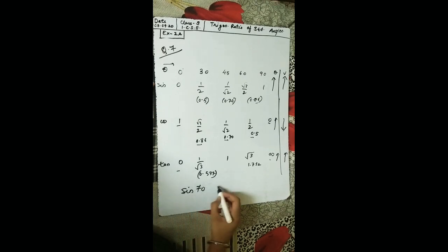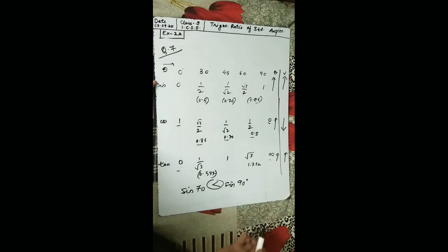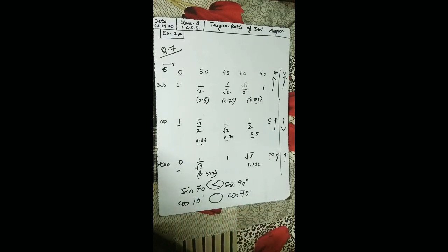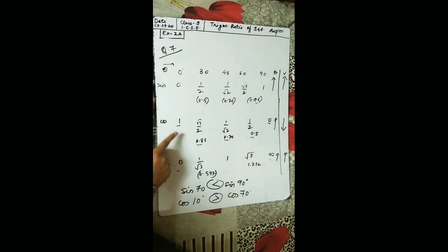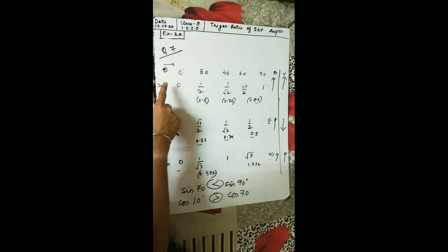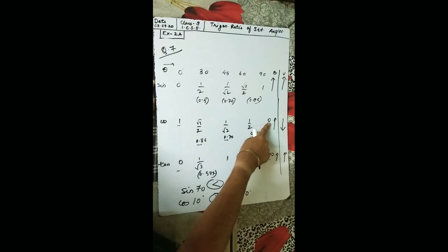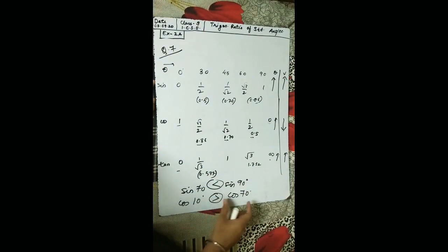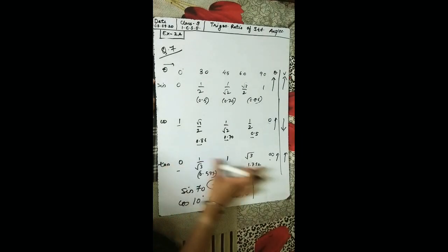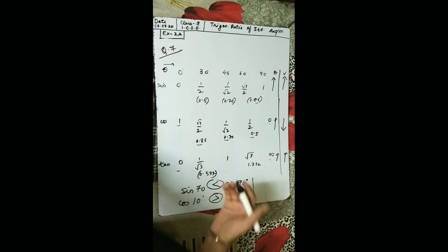If asked sine 70° versus sine 90°, sine 90° is greater. If asked cos 10° versus cos 70°, cos 10° is greater because cos decreases as angle increases — from larger to smaller. For tan, the same increasing trend applies.